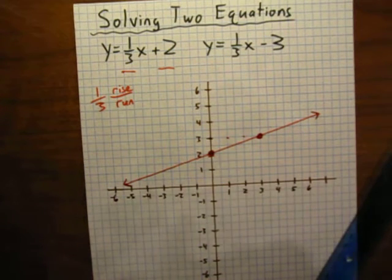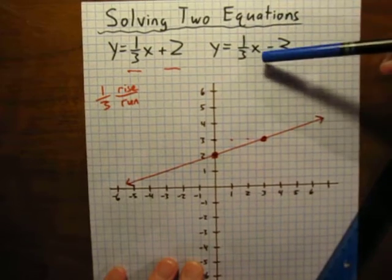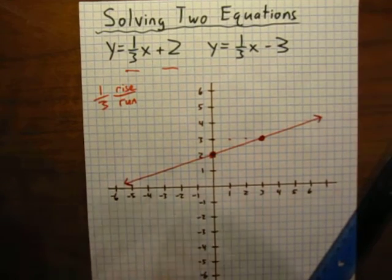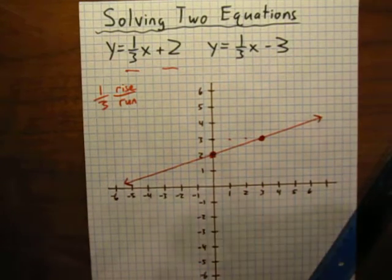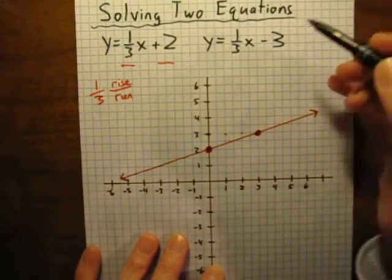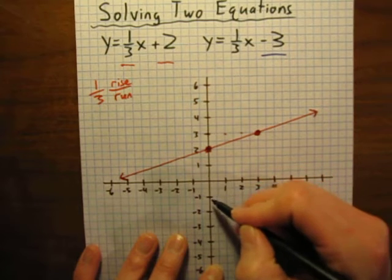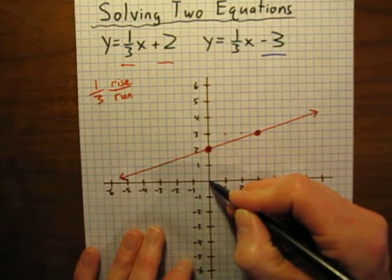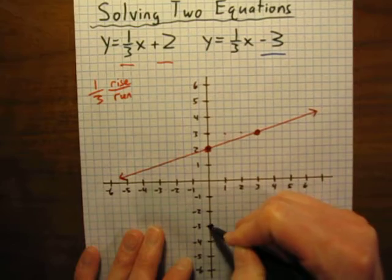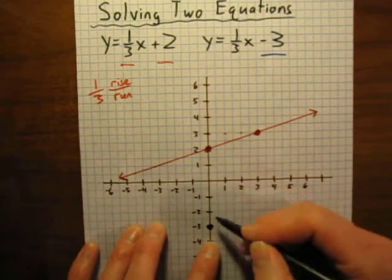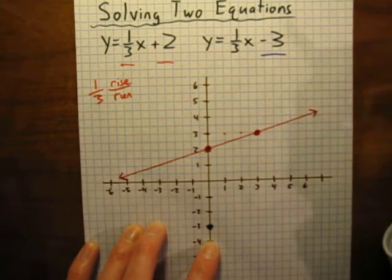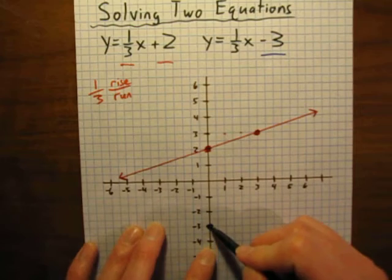Alright, let's try the next equation. The next equation is y = 1/3x - 3. So just like the first one, we start with the y-intercept. The y-intercept is minus three. So let's go on the y-axis. Let's go down one, two, three to that point right there. We went down because this is a negative three. So that's going to be our starting point.